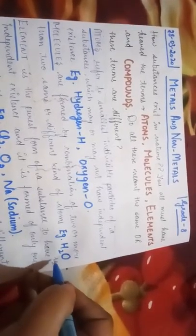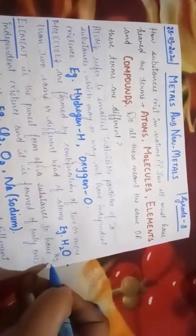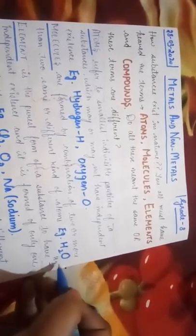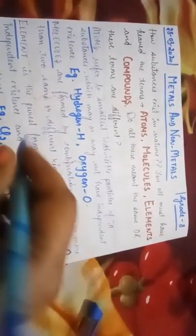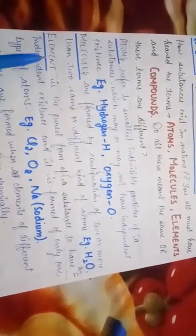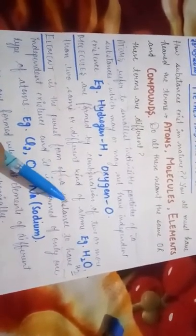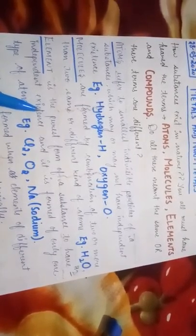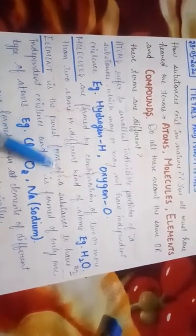Then what are elements? Element is the purest form of a substance to have independent existence. This means elements exist independently and it is formed of only one type of atoms.